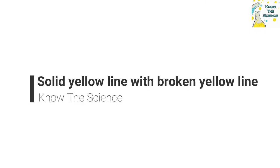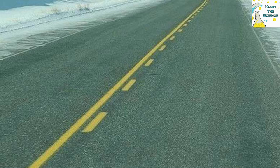Solid yellow line with broken yellow line: a solid yellow line combined with a broken yellow line on the roads indicates that if you are driving on the side of the broken line, you can overtake. However, if you are on the side of the solid line, you are not allowed to do so.